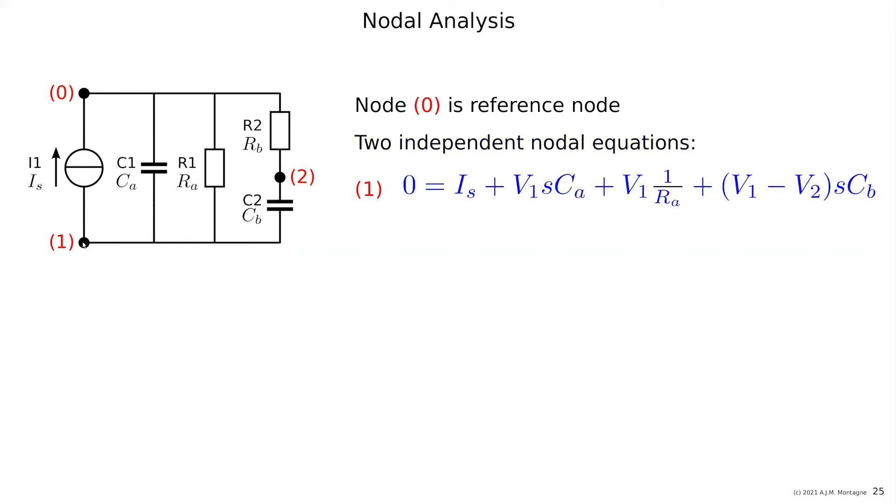And one nodal equation for node 1 is that all the currents flowing from those nodes add up to 0, which is here I_S. V1, which is the voltage at node 1 with respect to node 0, the reference node. So the plus is on the bottom and the minus is on top. So it means that the current is from the plus to the minus through the element. So it is plus V1 times sC_A, which is the current through C1. And the current through R_A is V1 times 1 over R_A. And the current through C_B is sC_B times V1. But there's this voltage here, so we have to subtract the voltage from node 2. So here we have one equation.